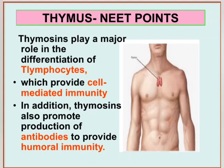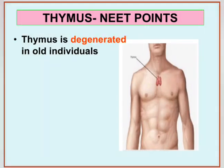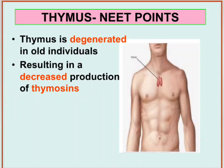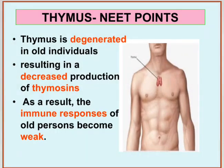Antibodies are a kind of protein produced by B-lymphocytes. The thymus degenerates in old individuals — that means in old age, the thymus completely disappears. We will discuss this in detail in the golden segment. As a result, the thymosin hormone is also reduced. Hence, when the thymus gland disappears, the immune response of the old person becomes very weak.